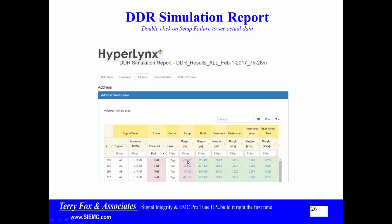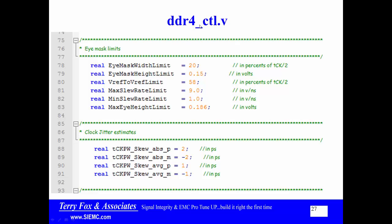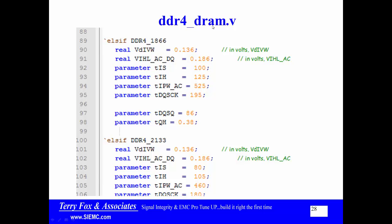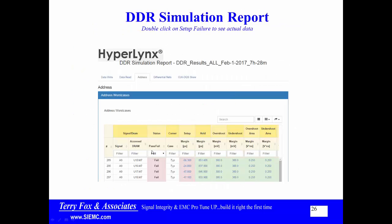When doing data read, the timing as seen at the controller comes into play. The controller is a little easier because we're talking about percentages of the clock tick. Look at both DDR4 control and DDR4 DRAM files if you want to understand how the tool decided that was an inadequate time — that's where those numbers come from.